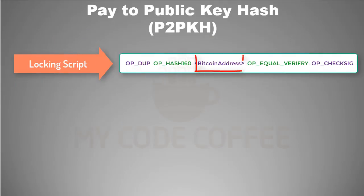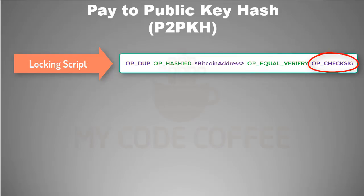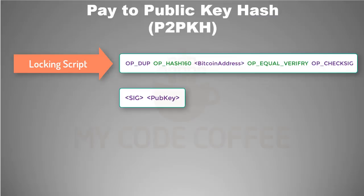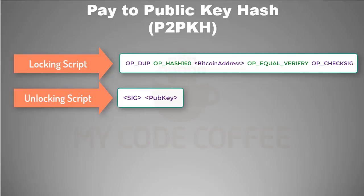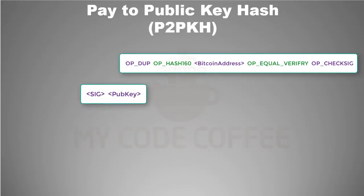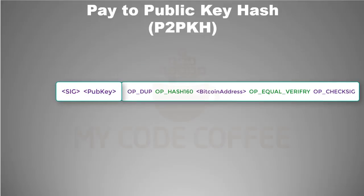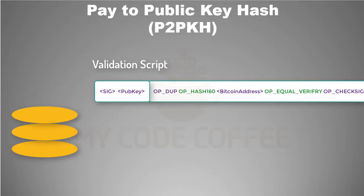A typical P2PKH locking script has the Bitcoin address — which is nothing but the hash of the public key — and some operations, including an operation to verify the digital signature. We have seen in a previous chapter that digital signature is verified using the elliptic curve digital signature algorithm, and for this verification you need the digital signature and the public key. This combination of digital signature and public key is what we call the unlocking script, which is part of the transaction input. The unlocking script of the transaction input is combined with the locking script of the transaction output to form a combined validation script, and the result will be true only if the unlocking script satisfies the conditions set by the locking script. This script is evaluated using a stack data structure.